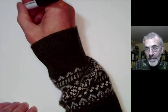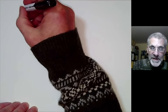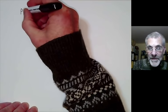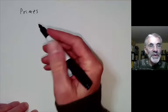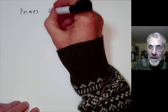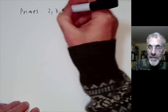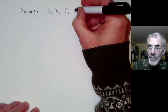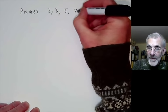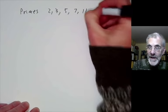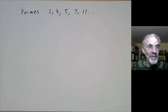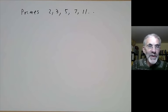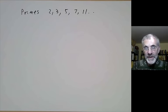Number theory is, quite a lot of it, about primes. A prime number is a number bigger than one that's only divisible by one and itself, and the first few primes look like this. We can ask some basic questions about prime numbers. The first question is: how do you find prime numbers?